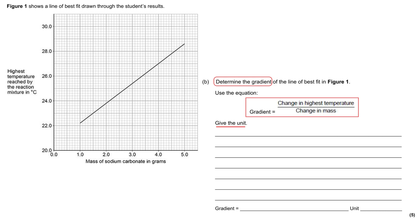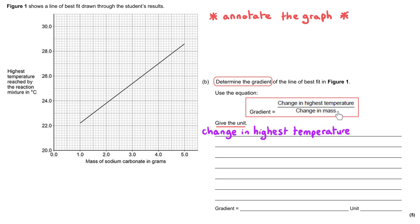When you have a graph question, get into the habit of annotating the graph to show the examiner how you extracted the data — if you extract the wrong data, you can still get some credit. We need to find the change in highest temperature and the change in mass. The y-axis goes up in 0.2 for each small square: the bottom is 20, and ten small squares up gives 22, a change of 2°C over 10 squares.